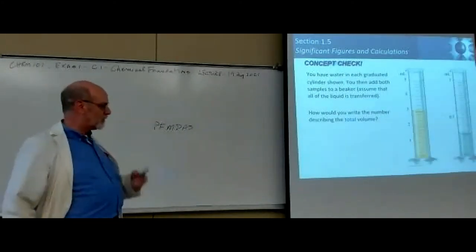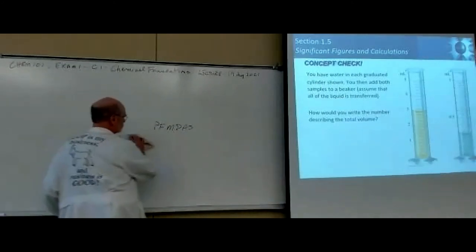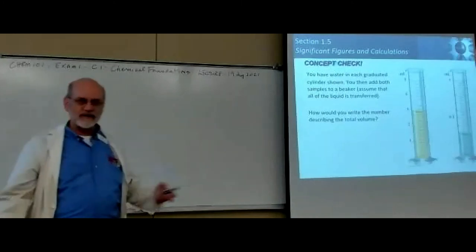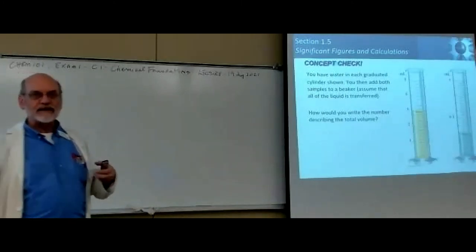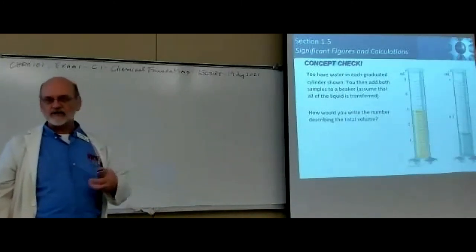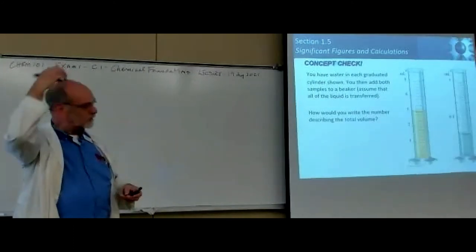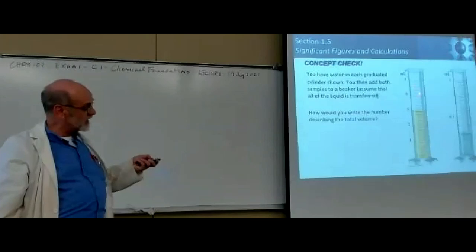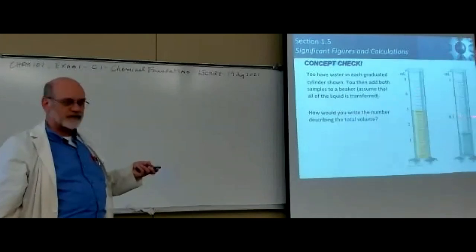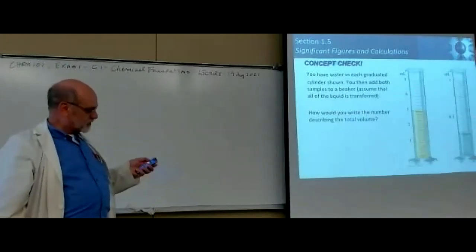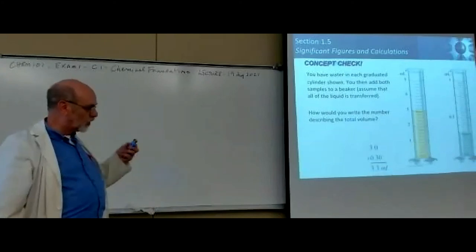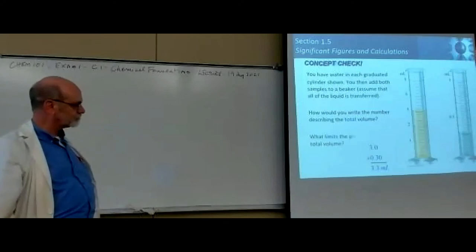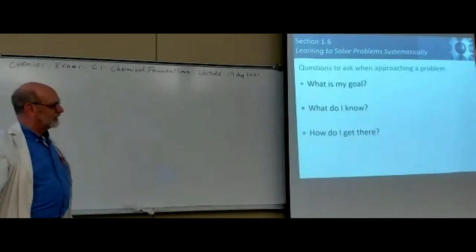In the laboratory, if you're measuring volume in this case, you're limited by the least accurate instrument in the series. So this one is the least accurate, right? Because these divisions are two-tenths and over here they're two-hundredths.